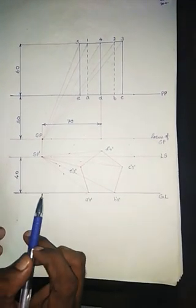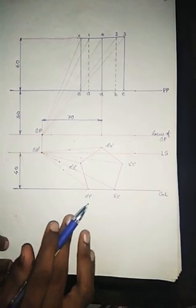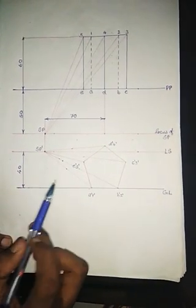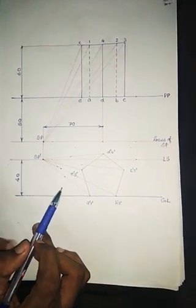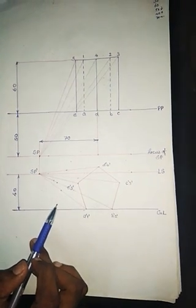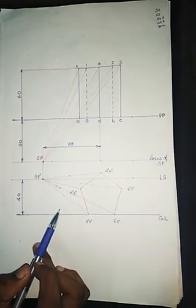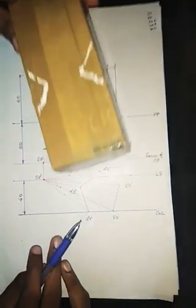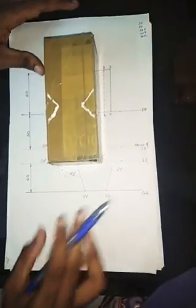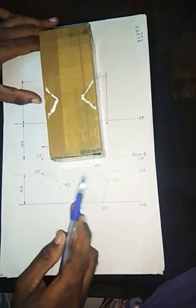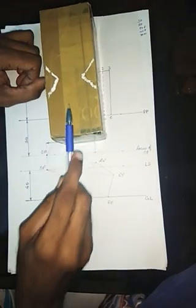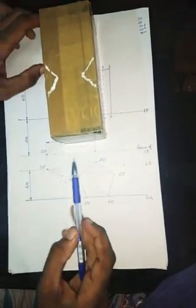Next, we are going to draw the perspective projection of a pentagonal prism that is lying on its rectangular face. Till now we were drawing solids resting on their base; here the solid is going to rest on its rectangular face. Just assume we have a pentagonal prism resting on its rectangular face with the axis perpendicular to the picture plane.